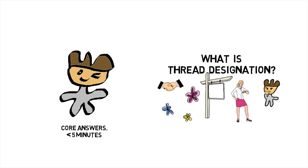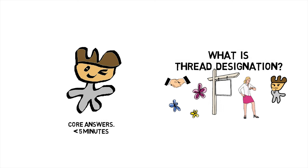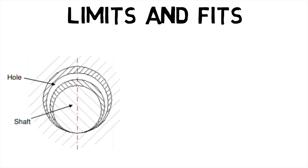Before we jump in, check out the previous part of this series to learn about what thread designation is. First, let's clear out some terminology. The term shaft refers not only to the diameter of a circular shaft but to any external dimension on a component, and the term hole refers not only to the diameter of a circular hole but to any internal dimension of a component.